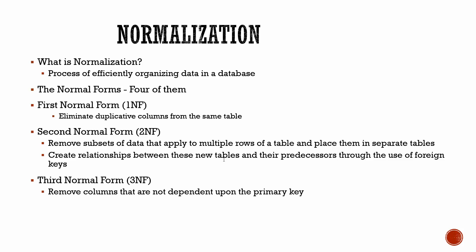The third level is to remove columns that aren't dependent upon the key. A lot of times we put in extra data in our tables, and that data is not necessarily dependent upon the primary key — the database ID number — so it could be stored somewhere else. The fourth level is no multi-value dependencies, which is for professional database administrators. We won't get to that point, but we'll get through the third normal form.